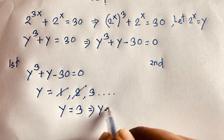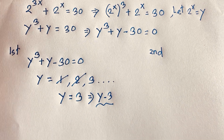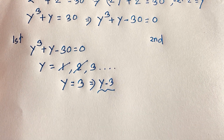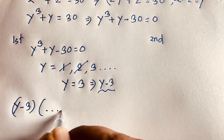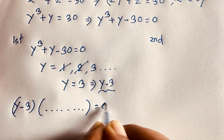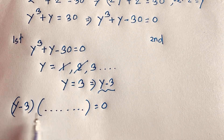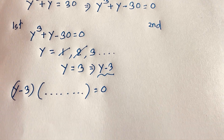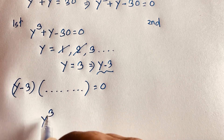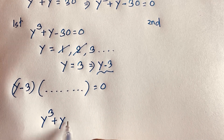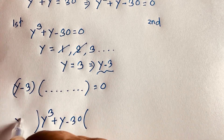We can see that (y − 3) is one factor of y³ + y − 30. Now we divide y³ + y − 30 by (y − 3) to find the other factors.